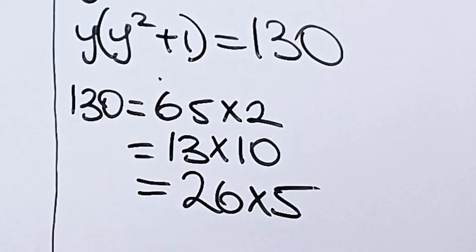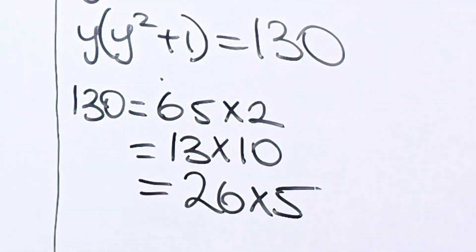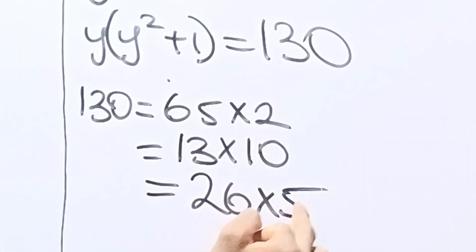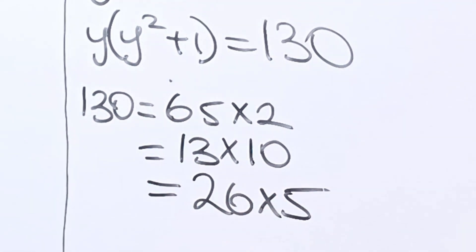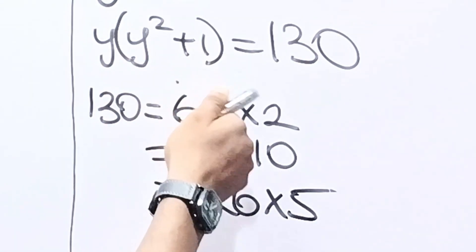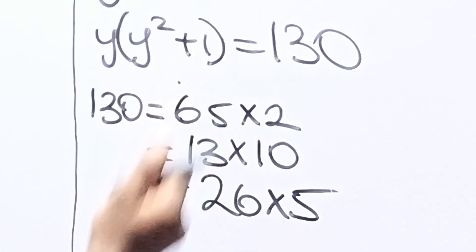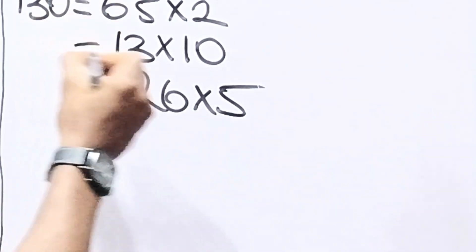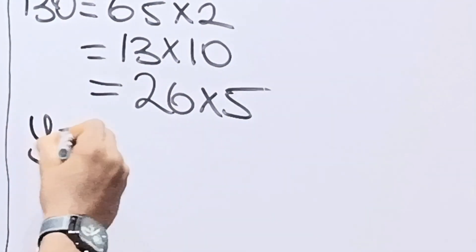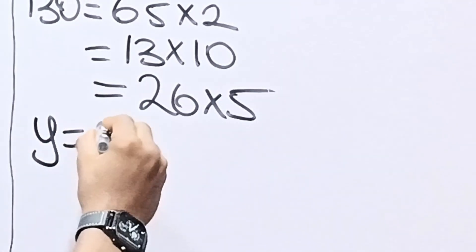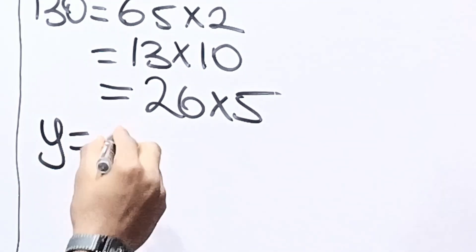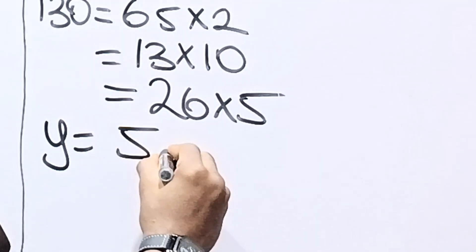Looking at this, the most suitable answer is 26 times 5, given that 5 squared is 25, and 25 plus 1 is 26. So we can say that y is equal to 5.